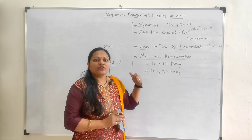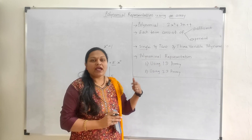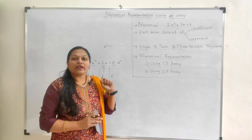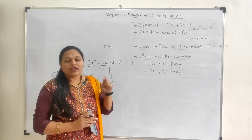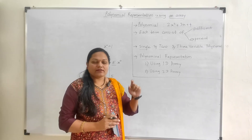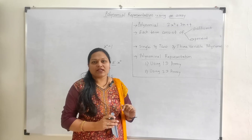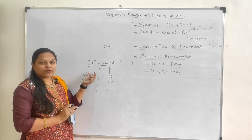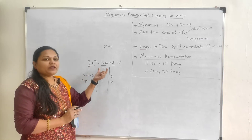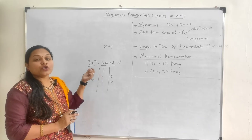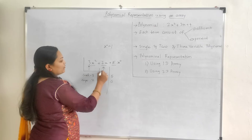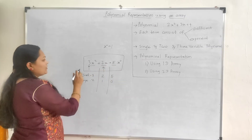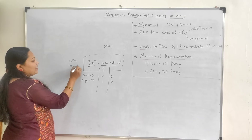There are different types of polynomial. The first one is the single variable, the second one is the two variable, and the third one is the three variable polynomial. In a single variable polynomial, only one variable is there. In a two variable polynomial, only two variables are there. And in a three variable polynomial, only three variables are there. If a polynomial includes only one variable, we say it is a one variable polynomial. This is an example of a one variable polynomial — only variable x is included.